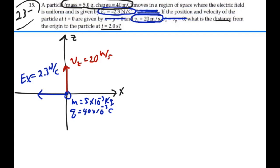So it's strictly a two-dimensional kinematic problem. Our acceleration in the x direction is going to equal our charge to mass ratio times the field. That's going to be 40 mC over 5 grams times the E field.